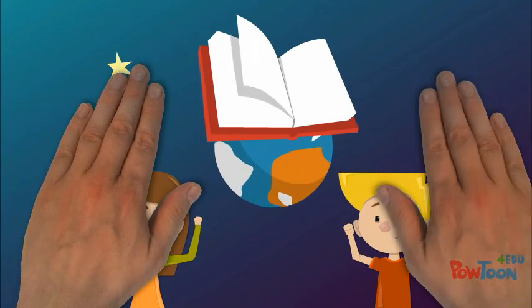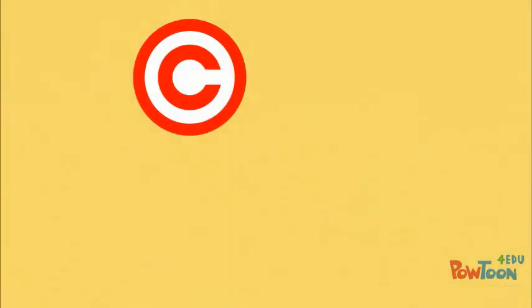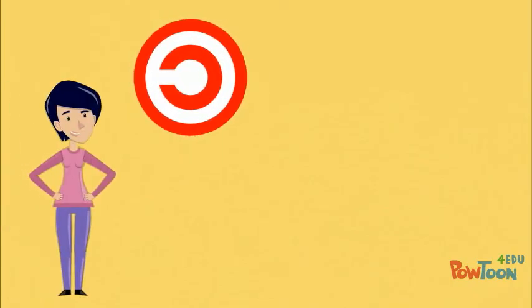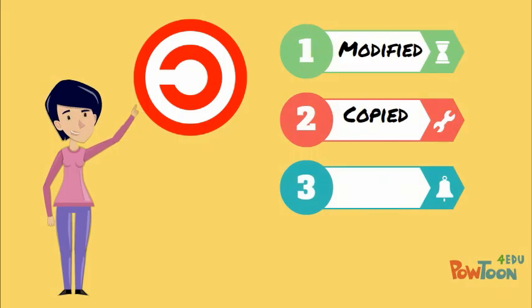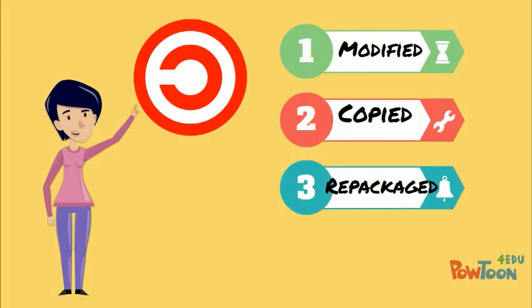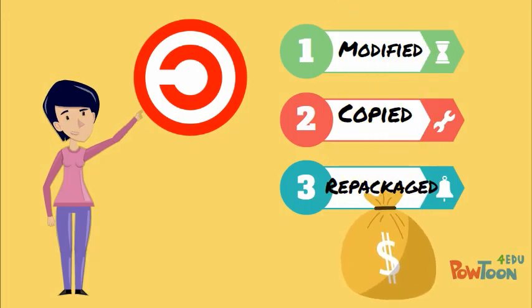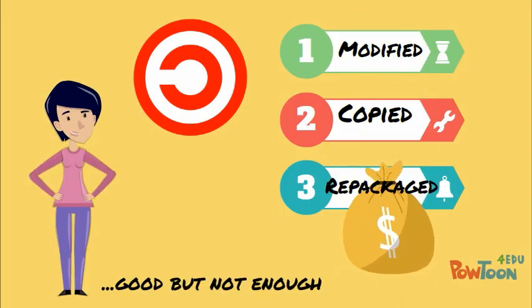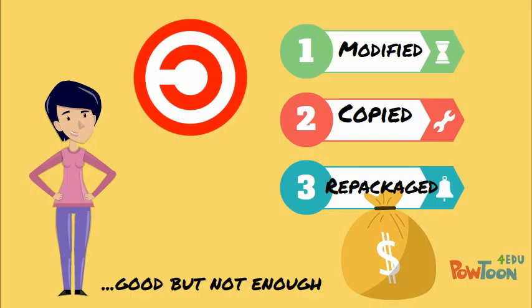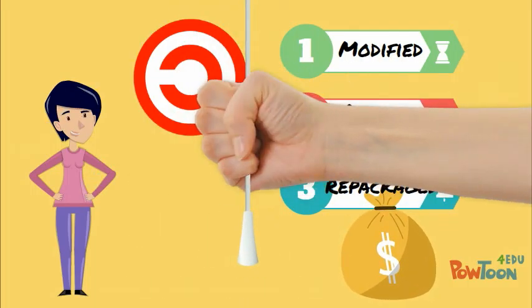In came copyleft, and things started to change. When a product is copylefted, that means intellectual property can be modified, copied, repackaged, and even sold as a copyrighted product as long as the original author is credited. That means your product would not be free anymore.